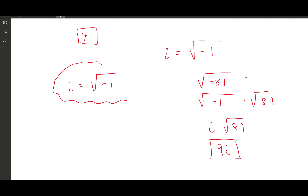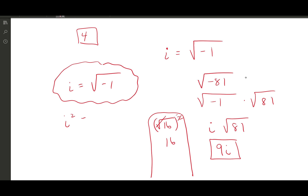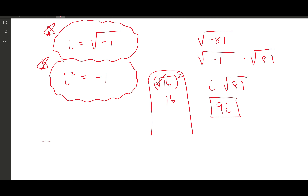Something important to remember: when we square a square root, they cancel out and you're left with the number inside. So squaring the square root of negative 1 leaves us with negative 1. These are two key definitions: i equals the square root of negative 1, and i squared equals negative 1.